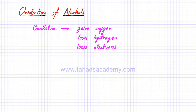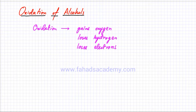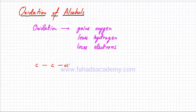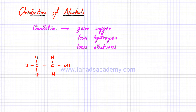So we have three definitions of oxidation: gain of oxygen, loss of hydrogen, or loss of electrons. What happens when an alcohol gets oxidized? This applies to all alcohols, and we will study oxidation in more detail at A-levels. For O-levels, whenever you have a primary alcohol — let's take a simple straight-chain alcohol — let's think of ethanol, which has two carbon atoms with an OH group attached. We complete the bonds by adding all the hydrogens. This is ethanol.